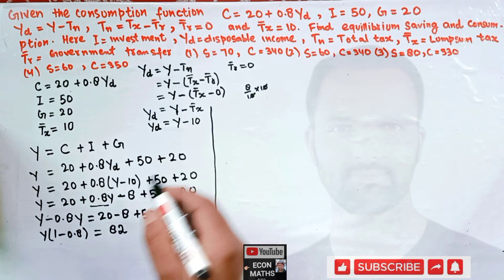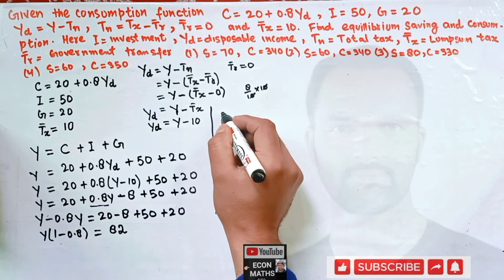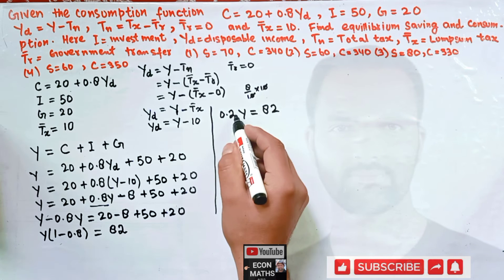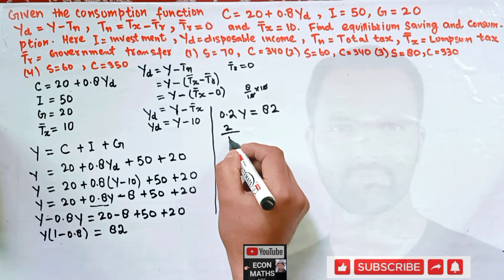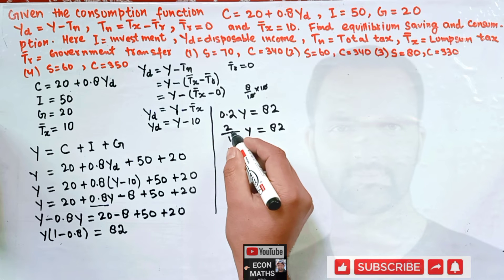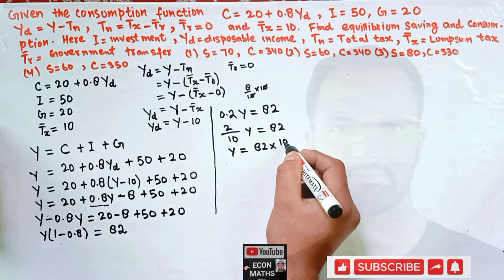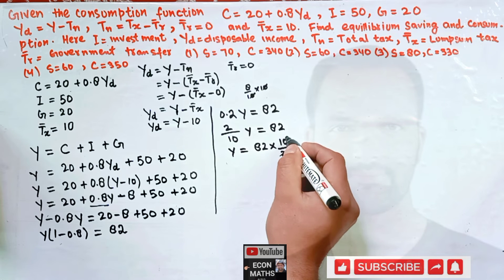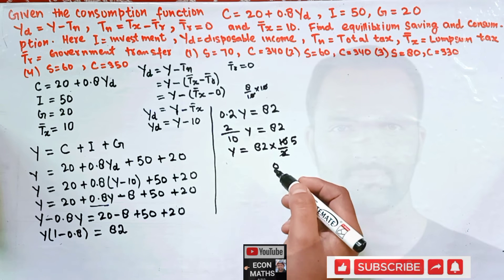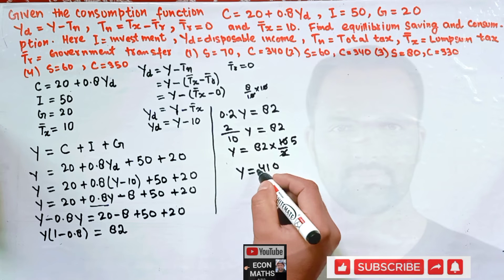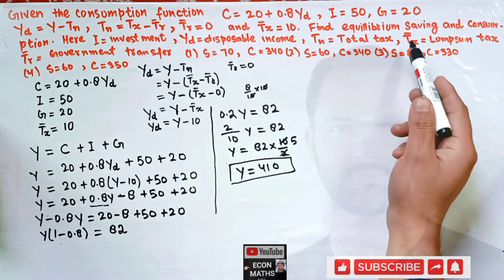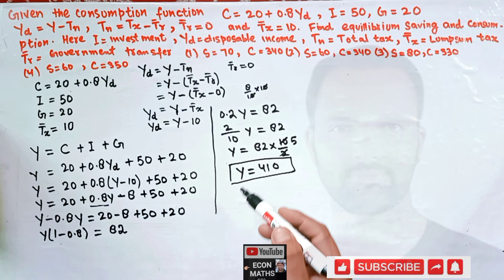Since 1 − 0.8 = 0.2, we have 0.2·Y = 82, or (2/10)·Y = 82. Solving for Y: Y = 82 × (10/2) = 82 × 5 = 410. So the equilibrium level of income is Y = 410.